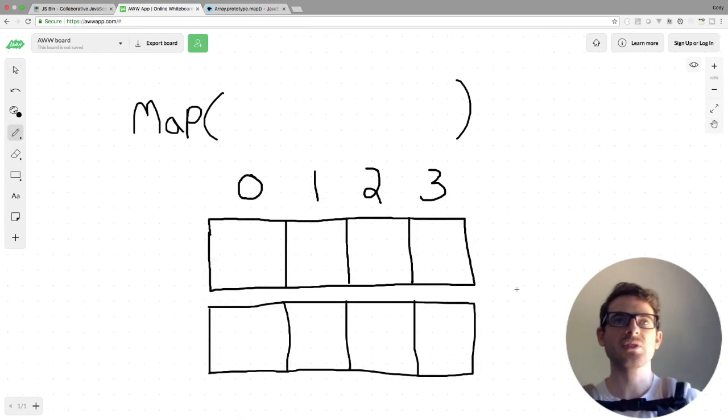All right, so for the first example I'm going to do, let's just go ahead and fill out an array of length four with some numbers: one, two, three, four. And we're going to write a map function which is going to just square these. So basically one will become one, two will become four, three will become nine, four will become sixteen.